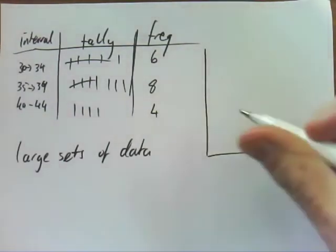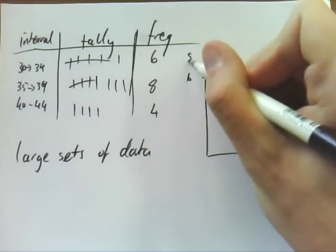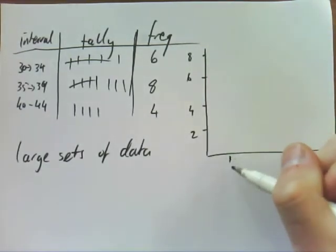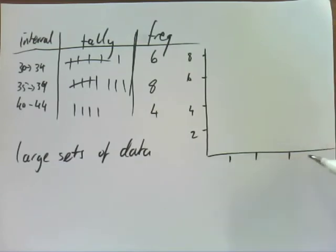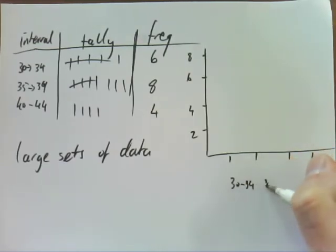And then you would transfer that onto a frequency histogram, like this, where you've got 30 to 34, 35 to 39, 40 to 44, and you draw a frequency histogram.